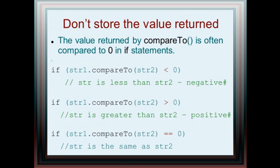Often you don't store the result in a variable. You just compare the value that's returned to 0. So if it's less than 0, you know that string1 is less than string2. If it's greater than 0, then you know string1 is greater than string2, or it occurs in alphabetical order after string2. And if it returns 0, you know that there's no differences, they are considered the same.